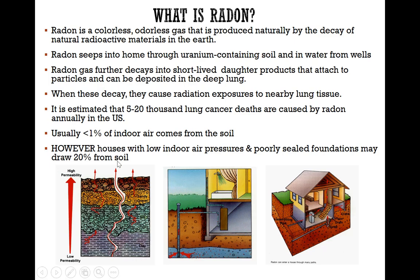The indoor air that comes from the soil is typically less than 1%. However, for houses with low indoor pressure and poorly sealed foundations, they may draw as much as 20% of their air from the soil. Radioactive isotopes from the soil decay into radon gas, which slowly seeps up from the soil into the air, finding cracks and pipes and progressively accumulating in the basement or other tight spaces in our homes.